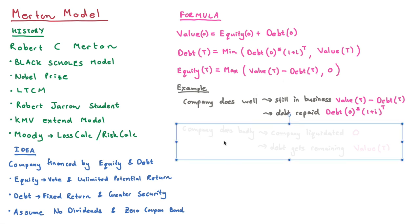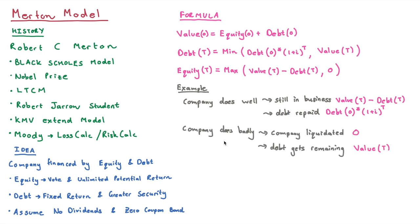When the company does badly, the company gets liquidated — it's game over. In this situation the debt cannot be paid, or the debt exceeds the value. Equity then receives zero. If the future value is less than the debt times the interest rate, that remaining amount is what the debt holders receive.